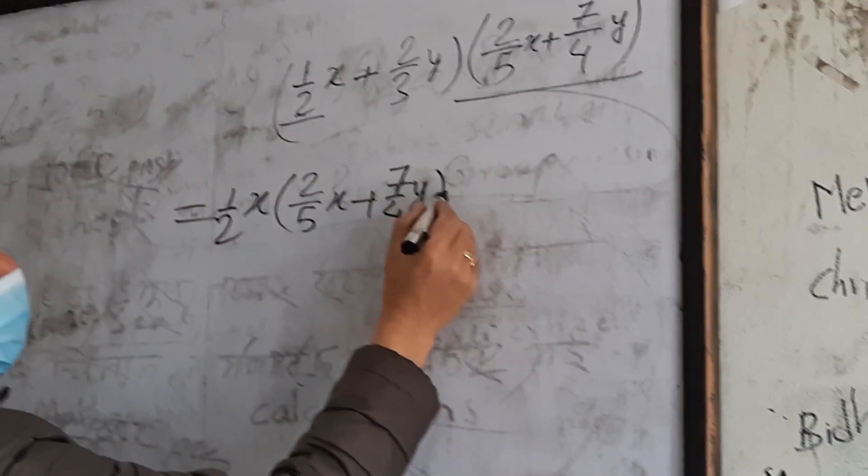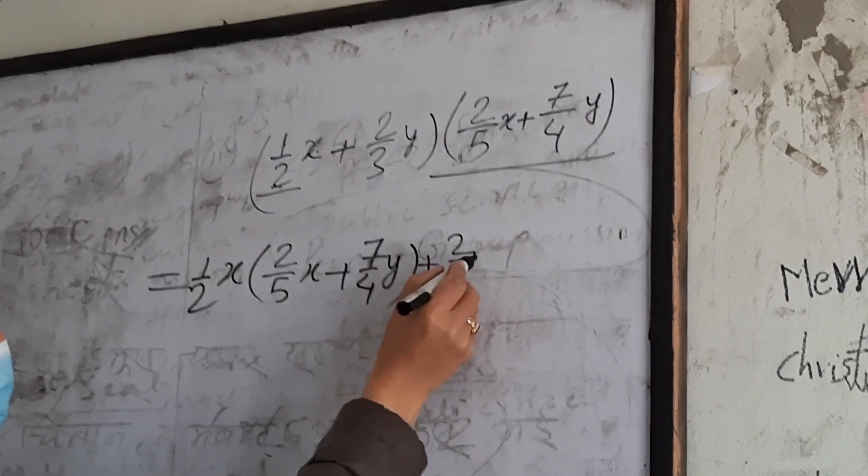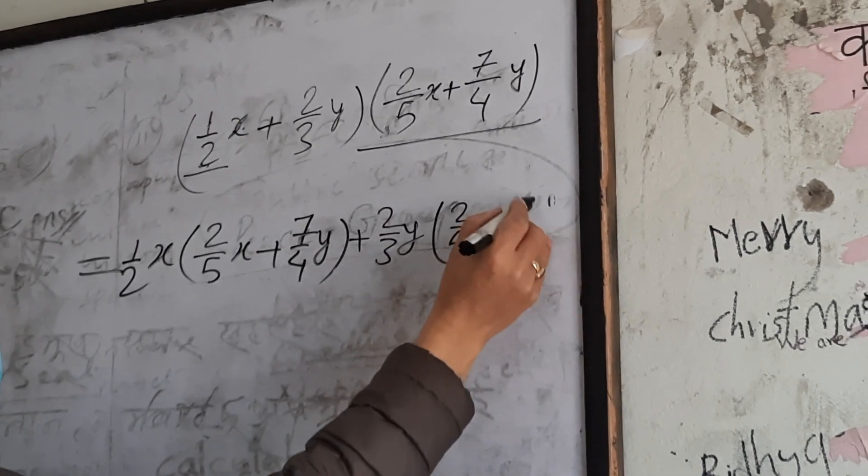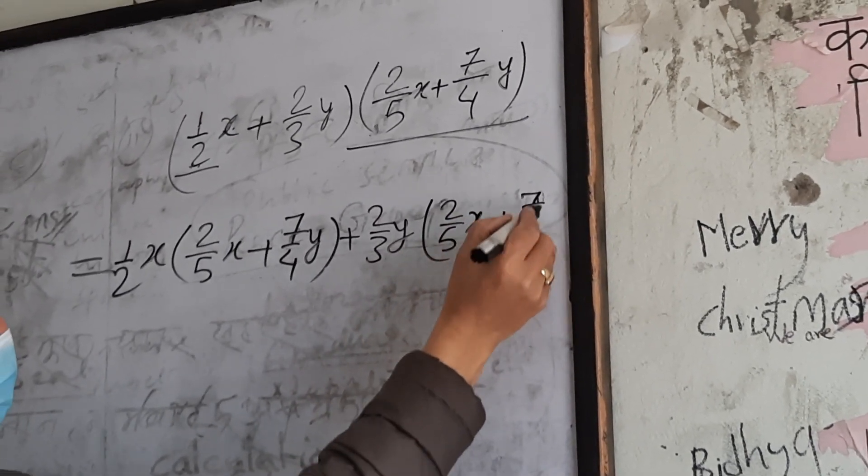2 by 3 y. 2 by 3 y is the same. 2 by 5 x plus 7 by 4 y.